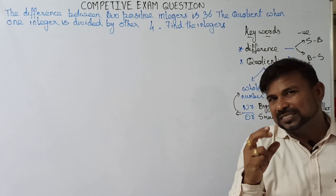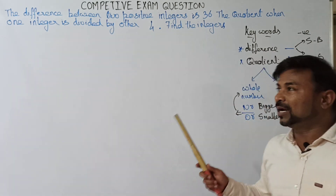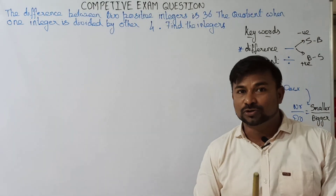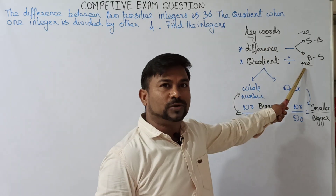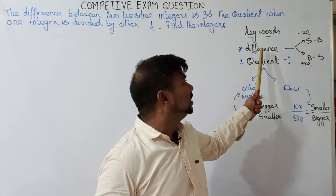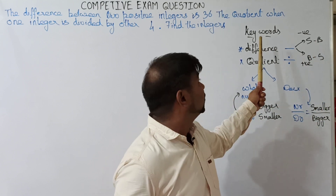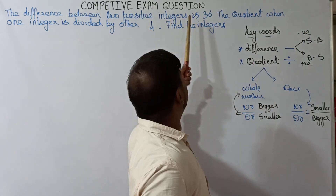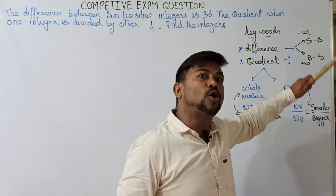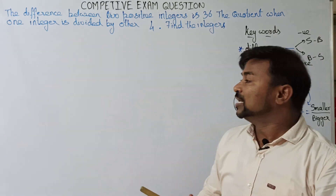We need to check whether the answer given is a positive integer or a negative integer. If the difference is given as a positive number, remember: bigger number minus smaller number. If the difference is given as a negative number, it means smaller number minus bigger number. That is point one.